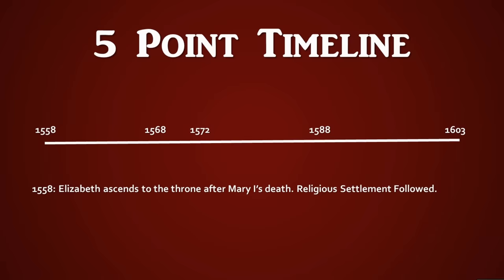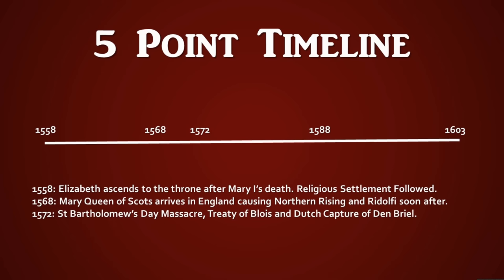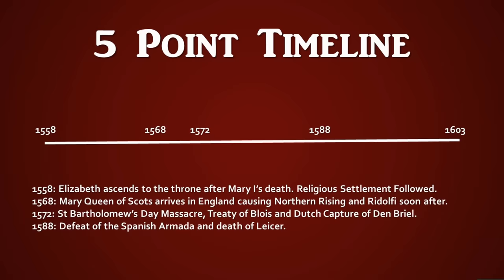To summarise the key timeline: 1558 — Elizabeth ascends the throne after Mary I's death; 1559 — the religious settlement with the Acts of Supremacy and Uniformity; 1568 — Mary Queen of Scots arrives in England, triggering the Northern Rising in 1569 and the Ridolfi Plot in 1571; 1572 — the St. Bartholomew's Day massacre, the Treaty of Blois, and the Dutch Sea Beggars' capture of Den Briel, sparking the Dutch revolt; 1585 — the Treaty of Nonsuch and open war with Spain; 1588 — the defeat of the Spanish Armada and the death of Leicester; 1603 — the death of Elizabeth herself.